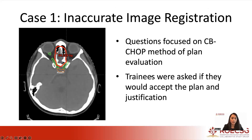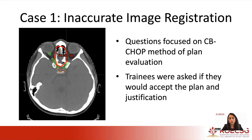If you look at the image on the left, the orange is what was contoured incorrectly, and the green is where the optic structures actually were. You can see the 60 gray isodose line is overlapping. The questions corresponding to this case were focused on the CB-CHOP method of plan evaluation, and trainees were asked if they would accept the plan and provide justification.